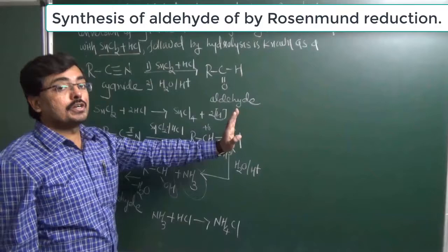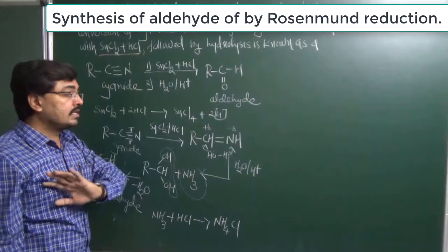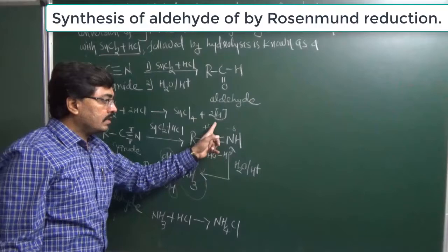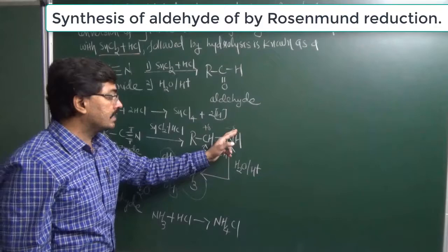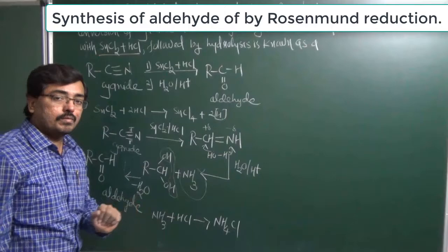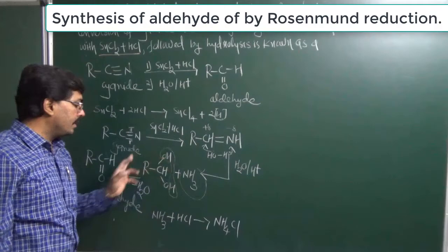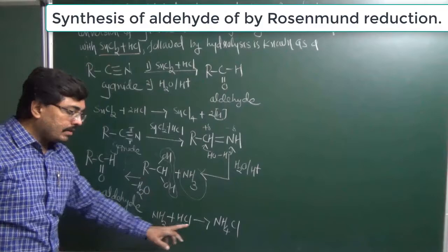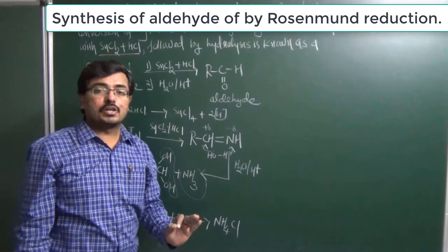Partial reduction is the most important word — 100% reduction is not done. During hydrolysis, the carbon-nitrogen bond breaks. Since nitrogen has higher electronegativity, it carries a negative charge; hydrogen is added on nitrogen and removes as NH3. OH from water is added on carbon, elimination of water occurs, and we get an aldehyde. Ammonia in acidic medium converts to ammonium chloride. This is how aldehyde is obtained from cyanide using the Stephen Reaction.